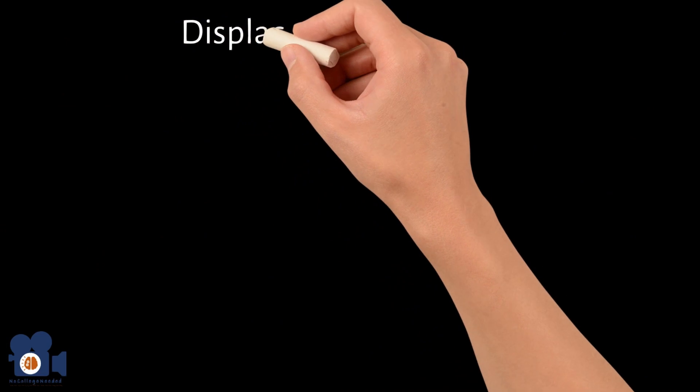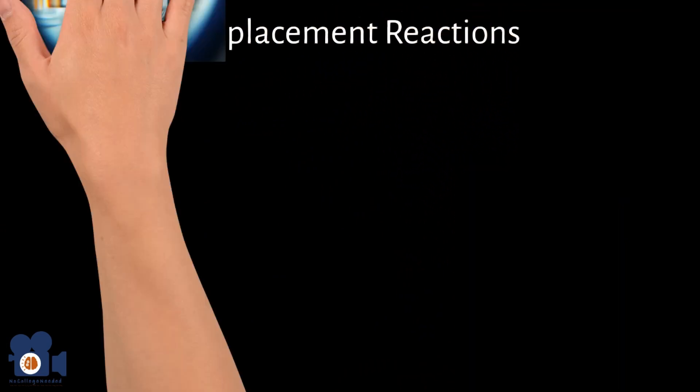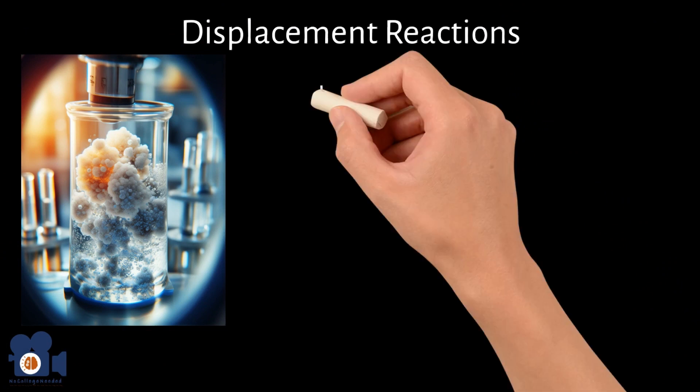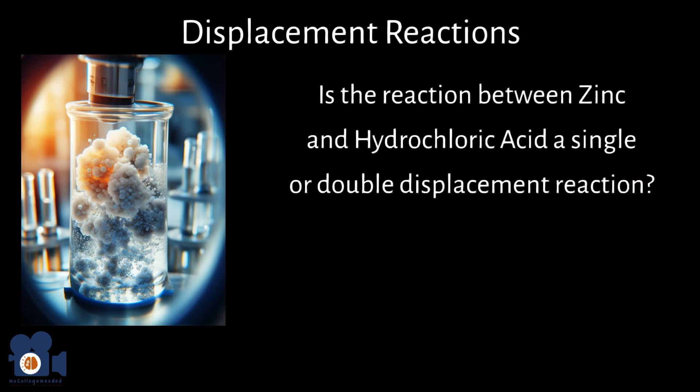With precipitation in Unit 4.2, we talked about the formation of solid precipitates from displacement reactants and spectator ions. Is the reaction between zinc and hydrochloric acid a single or double displacement reaction?